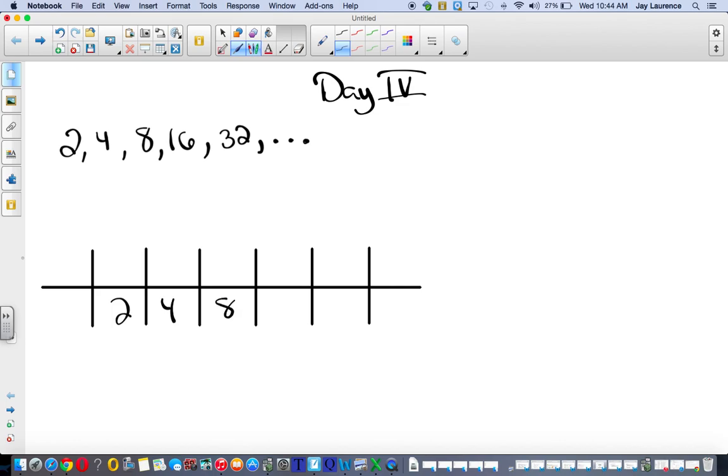It's going 2, 4, 8, 16, and 32, and that's the first term, second term, third term, fourth term, fifth term. Those are my inputs, my x's, and my f of x's, my outputs are there, and I'm looking for the nth term.